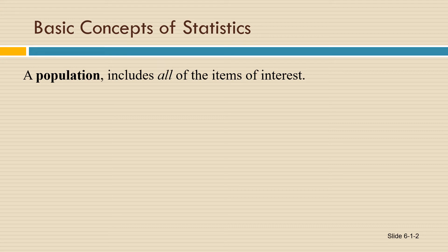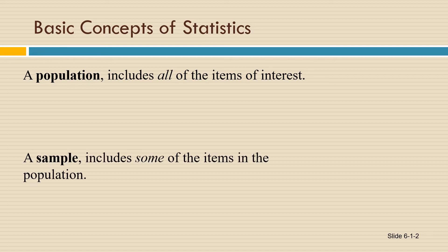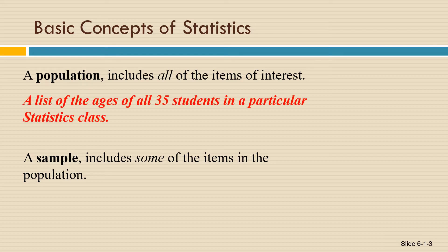The first term we're going to learn is population. When we refer to a population, we're talking about all the items of interest. For example, we might look at a list of all the ages of all 35 students in a particular statistics class. That would be the entire population of the statistics class.